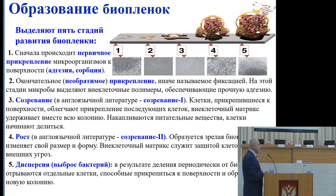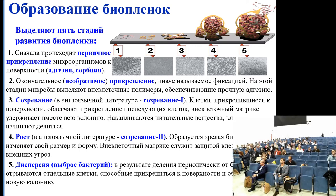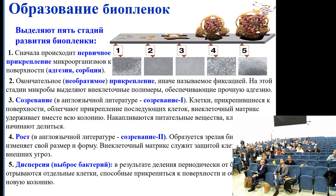Biofilm formation includes five stages. The first stage is the initial adhesion of microorganisms to a surface — any surface: tissue, catheters used in veins, in the urethra, in intubation tubes, anywhere they can be attached. This adhesion is a reversible stage. The second stage is not reversible and is called final adhesion, also known as fixation. At this stage, microbes produce noncellular polymers which provide for firm, tough adhesion.